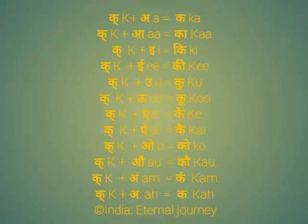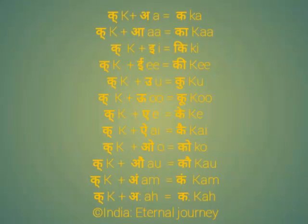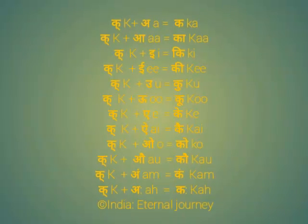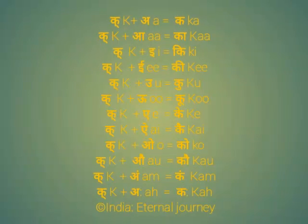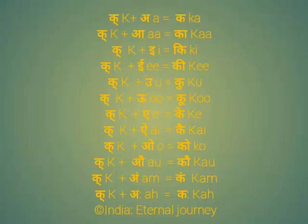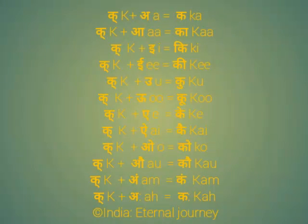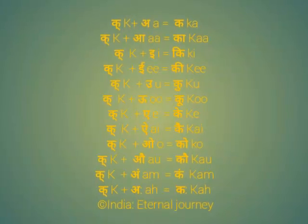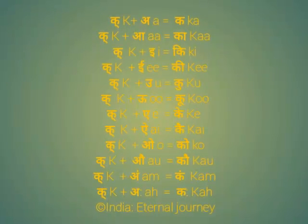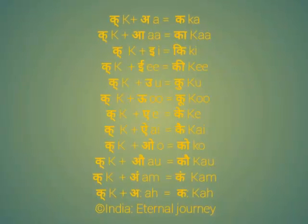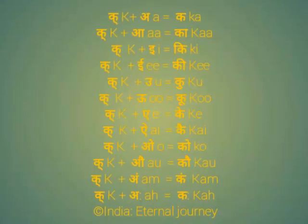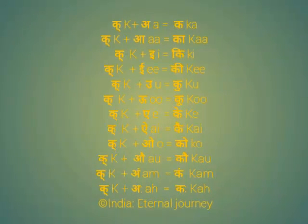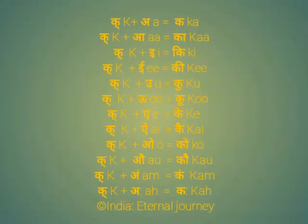Listen again: कु (ku). Then क combined with ऊ gives कू (ku). क combined with ए gives के (ke). क combined with ऐ gives कै (kai). क combined with ओ gives को (ko). क combined with औ gives कौ (kau). क combined with अं gives कं (kam). क combined with अः gives कः (kah).